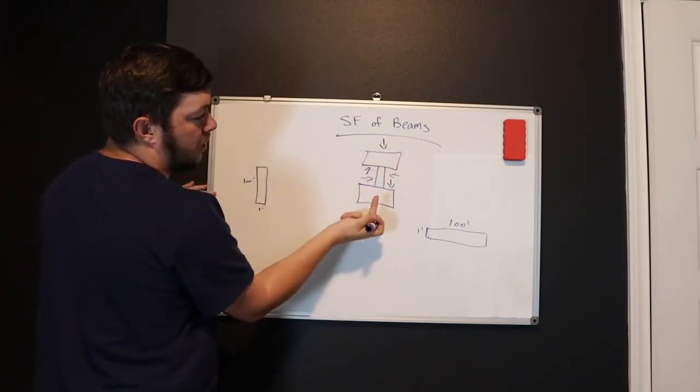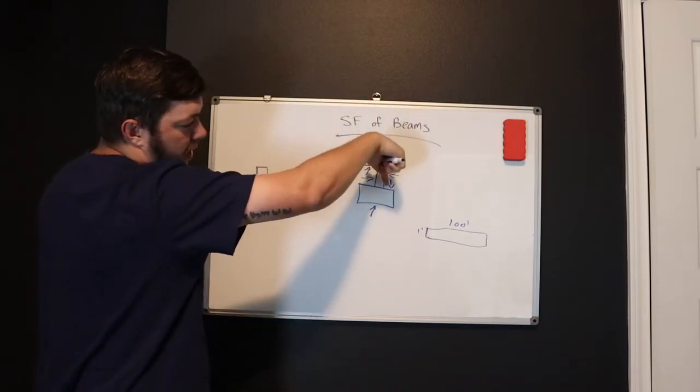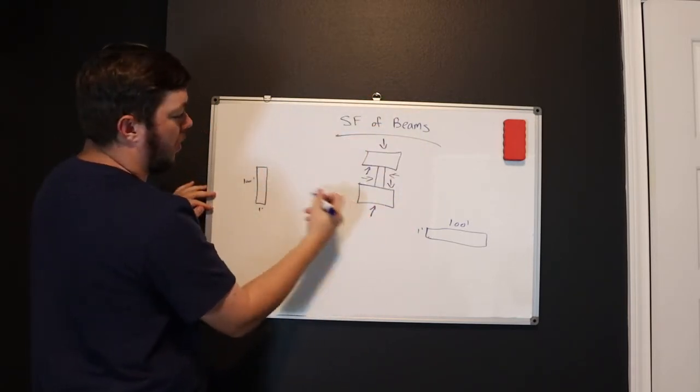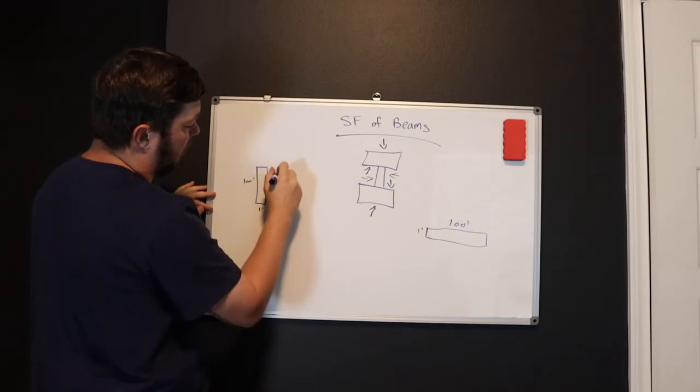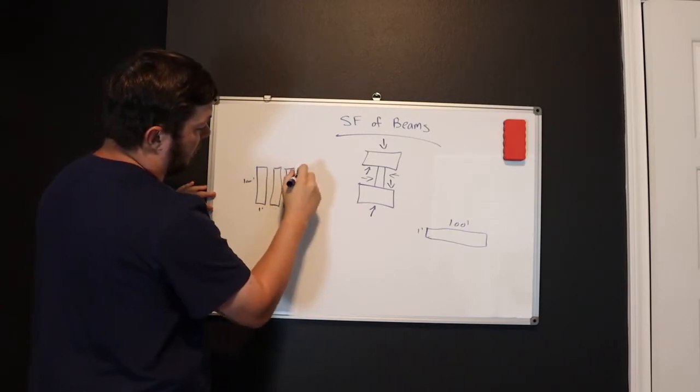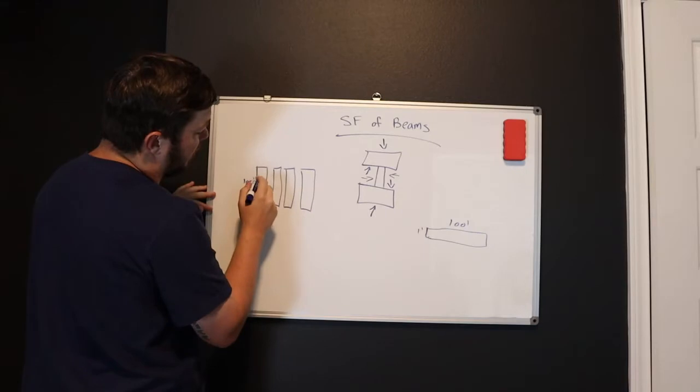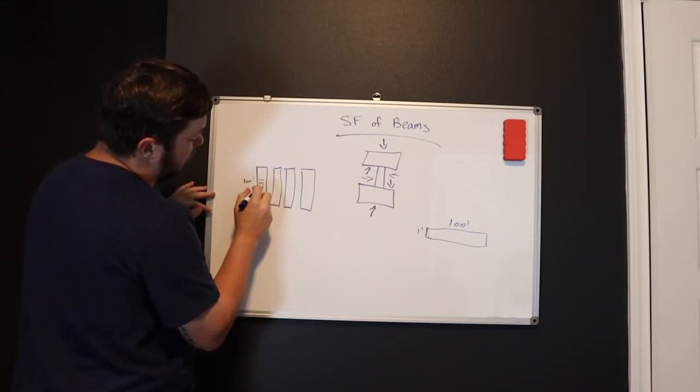This top run is going to look like this. And that's going to be one foot in width and 100 foot in length. And you're going to have one, two, three here, and four. So you're going to have four of these same exact length and width runs.